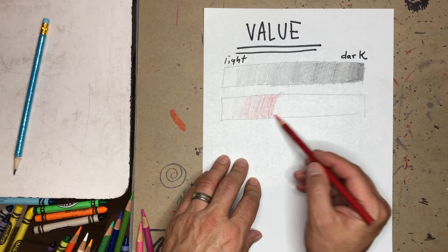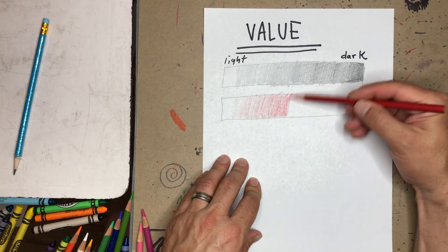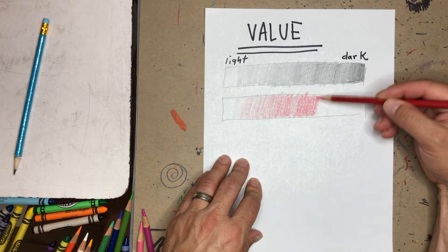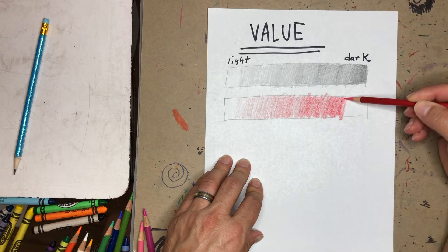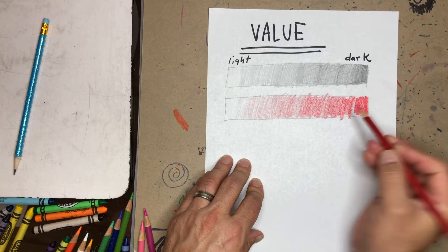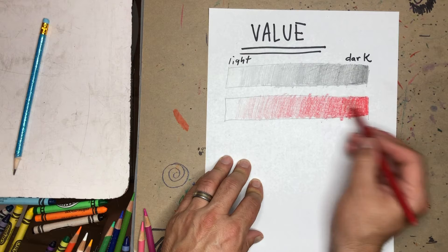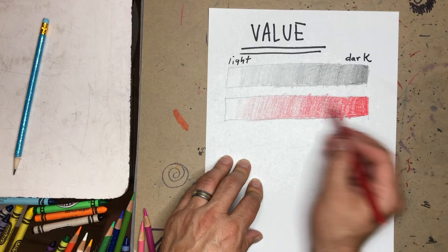I know it might be hard to see on the board, but I'm just adding more pressure as I go. And by the time I get to the end, I'll be pressing as hard as I can to get the darkest red that I can get. And now I'll just sort of blend that in, and then I have a very similar grayscale, which is kind of equal to a tint if I was adding white to this red.